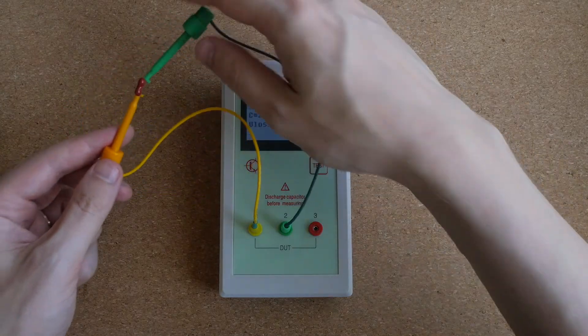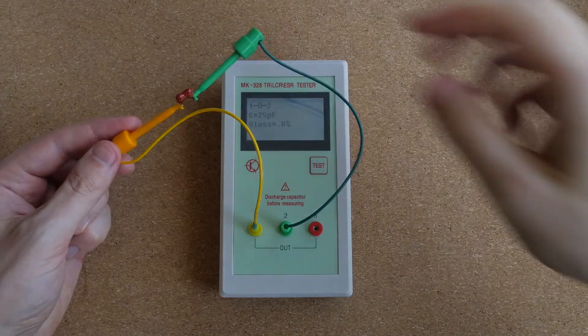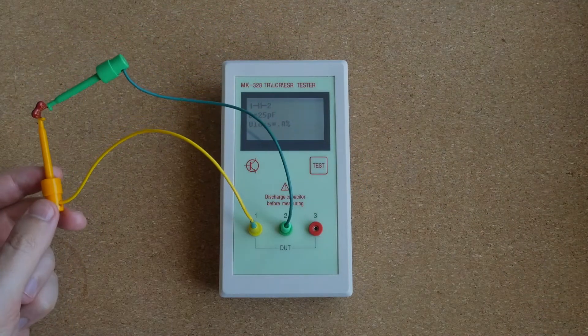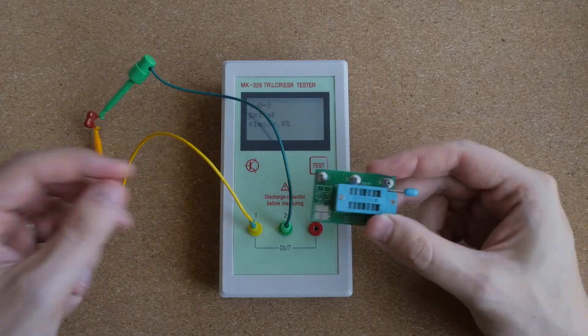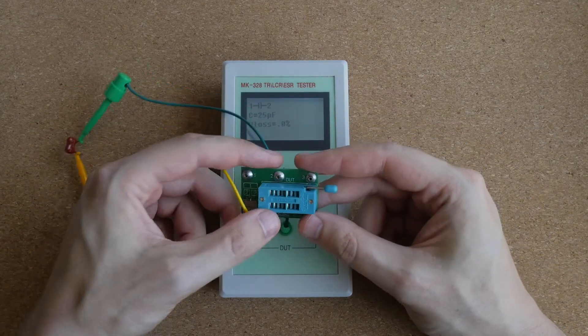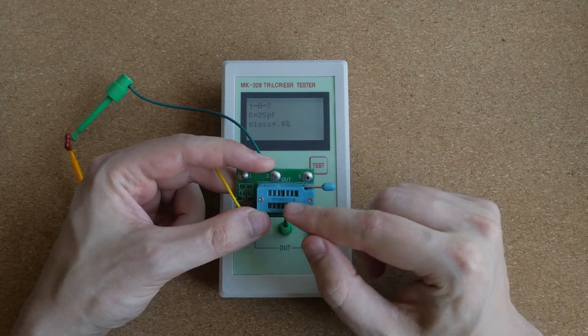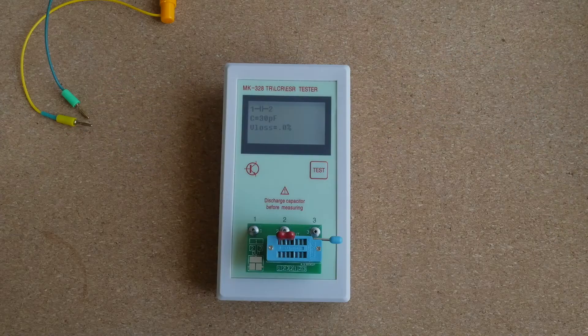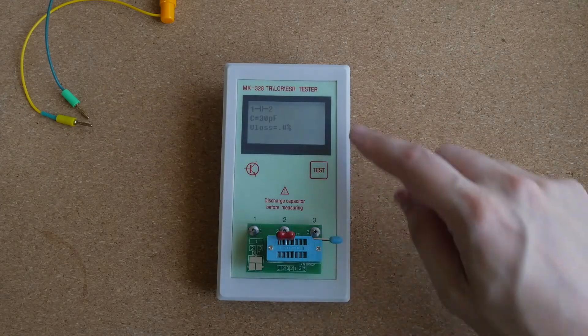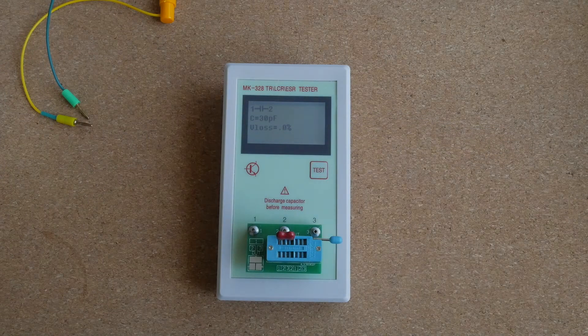When measuring capacitors in the picofarad range it is really better to use those clip leads instead of this ZIF socket, because the parallel contacts in the socket actually add some stray capacitance. So your measurements will be quite a bit off. As you can see the ZIF socket adds 5 picofarad of stray capacitance to our measurement.